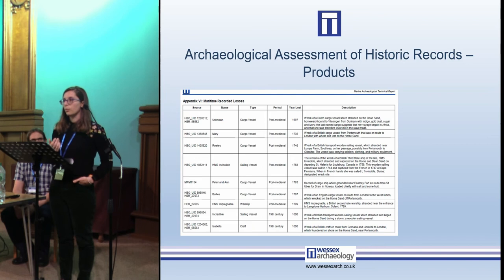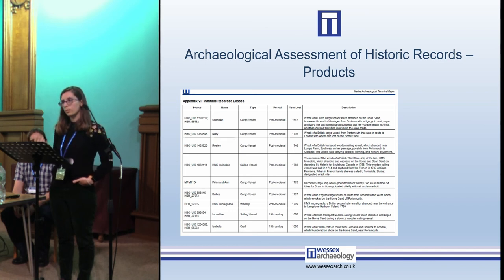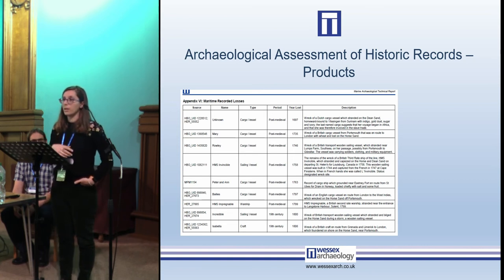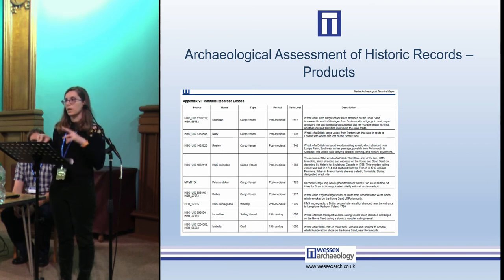Sometimes you cannot correlate the geophysical data with existing records, so you produce a separate section related to historic records — maritime losses where no specific GPS position is available. These are presented as a gazetteer with a description of each asset and a statement of potential for further maritime or aviation assets within the area. This also incorporates local historic environment records, combining different datasets into one gazetteer.